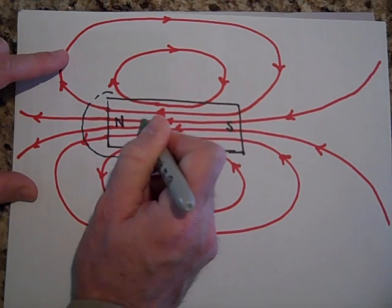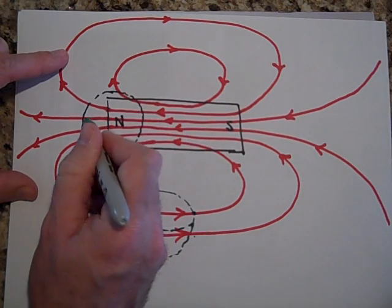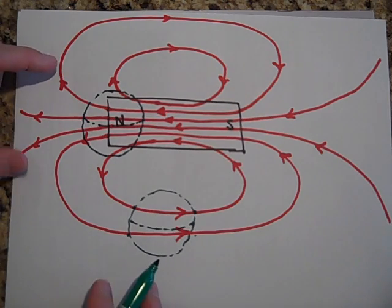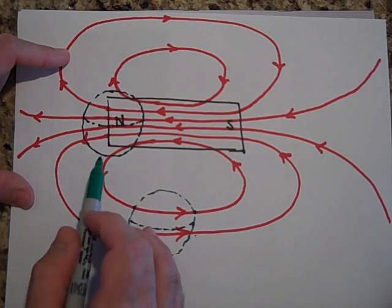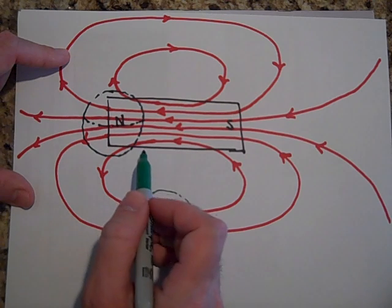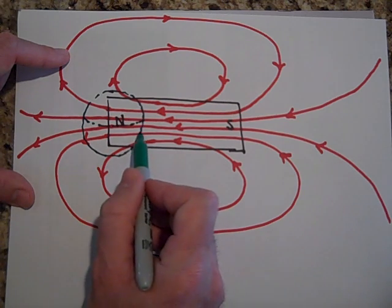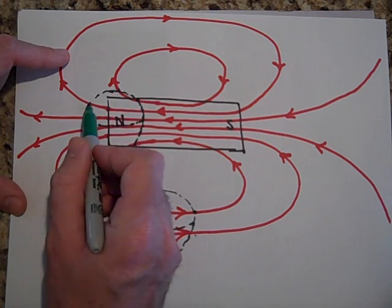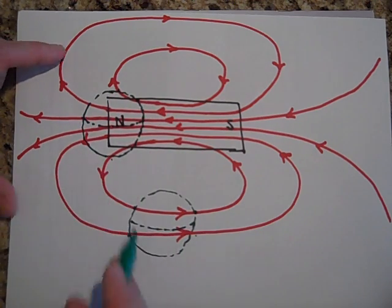Remember, Gaussian surfaces are imaginary, so if you're wondering how I'm going to fit one in there inside the magnet, all I got to do is imagine it. And so if you count how many lines go in: one, two, three, four, five, six. And how many lines come out: one, two, three, four, five, six.